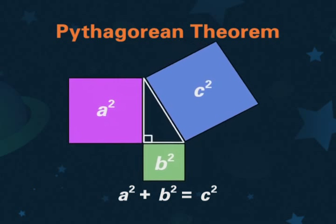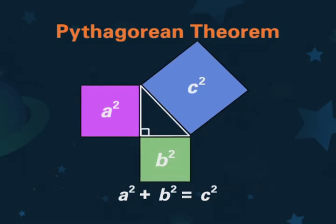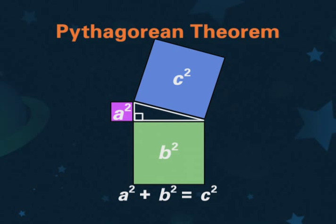No matter how the side lengths change, A squared plus B squared equals C squared as long as the triangle remains a right triangle.